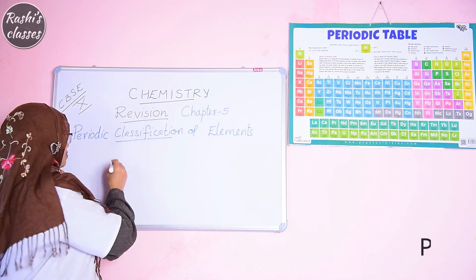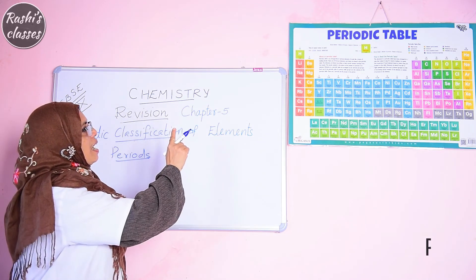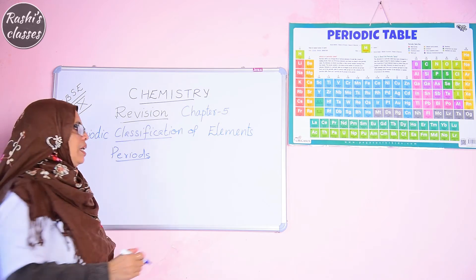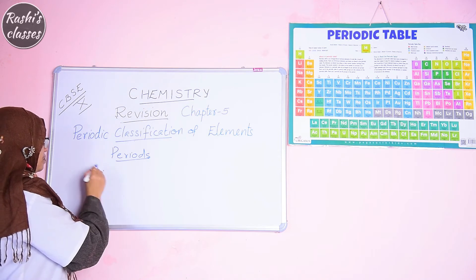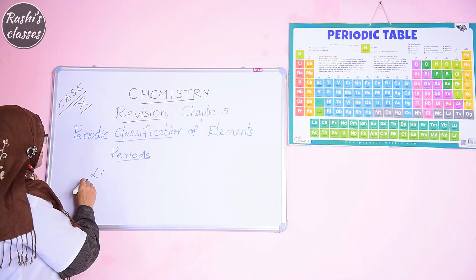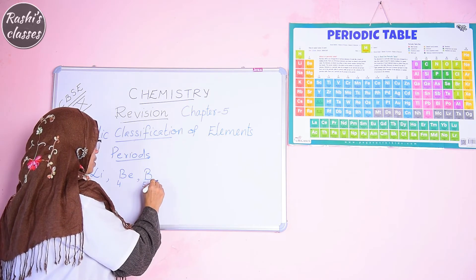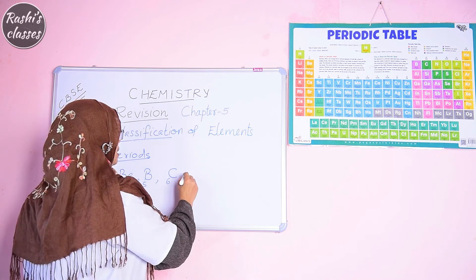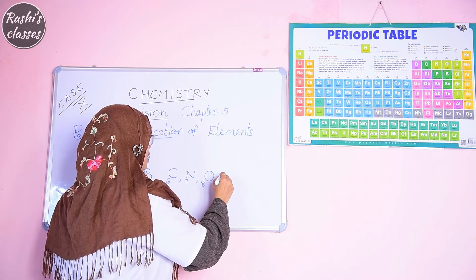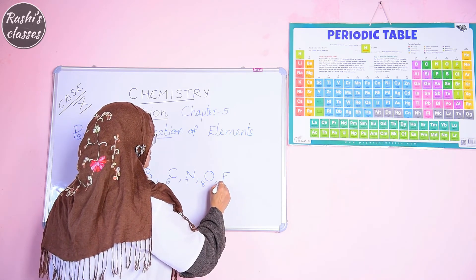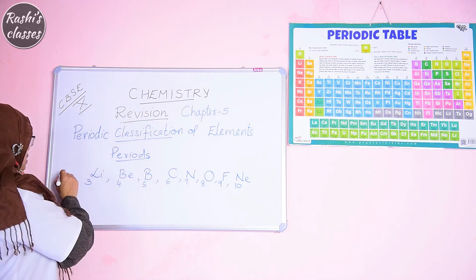Now, about the periods. The first period is hydrogen (atomic number 1) and helium (atomic number 2). The second period contains: lithium (3), beryllium (4), boron (5), carbon (6), nitrogen (7), oxygen (8), fluorine (9), and neon (10). This is period number 2.